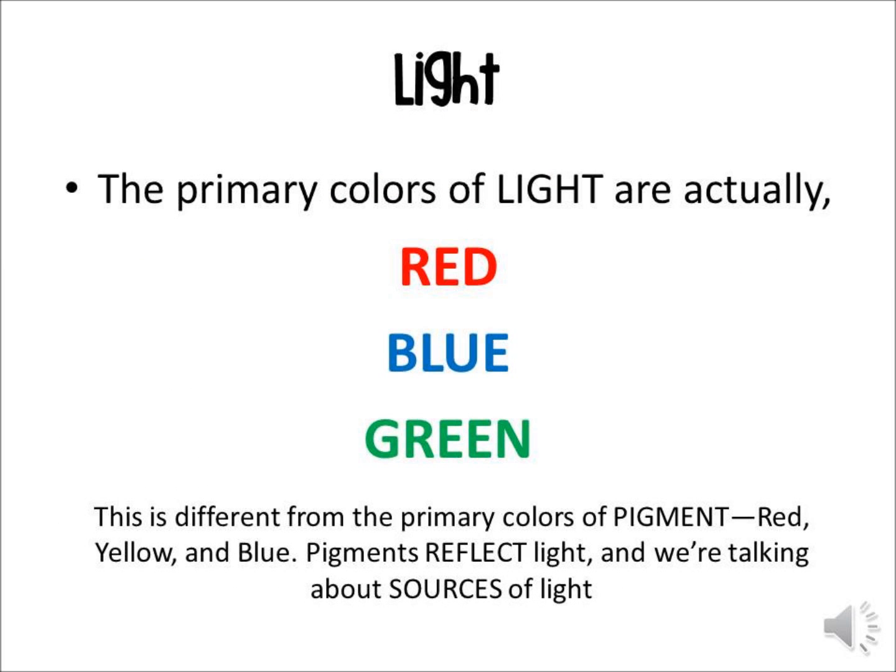The primary colors of light are actually red, blue, and green. Now this can be really confusing for kids, because you learn in art class that the primary colors for pigments — like paint and crayons and things like that — are red, yellow, and blue.